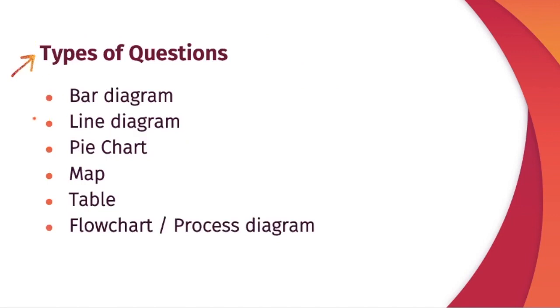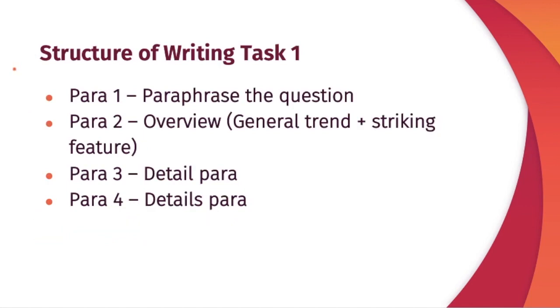Writing task one of academic can be a bar diagram, line diagram, pie chart, map, table, flow chart or process diagram. Today we'll look at the structure, the overall structure of any type of writing task one.